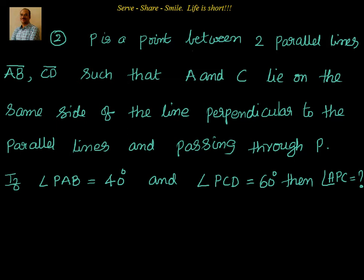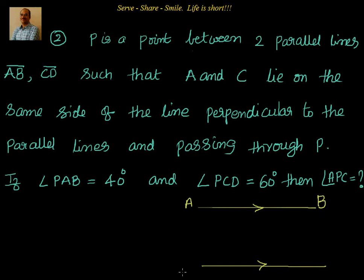To understand this, let's draw the figure. P is a point between two parallel lines AB and CD. First, let me draw the two parallel lines — this is my first parallel line and this is my second parallel line. These two lines are parallel to each other. We have A and B on the first line, and C and D on the second. We have been told that A and C lie on the same side of the line perpendicular to the parallel lines.